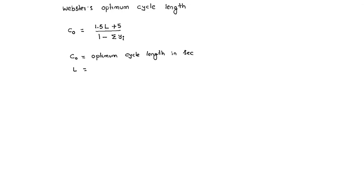L equals total lost time of all phases. Suppose it is a four-phase signal and each phase has lost time of 3 seconds, then 4 into 3 is L. L is total lost time of all phases.